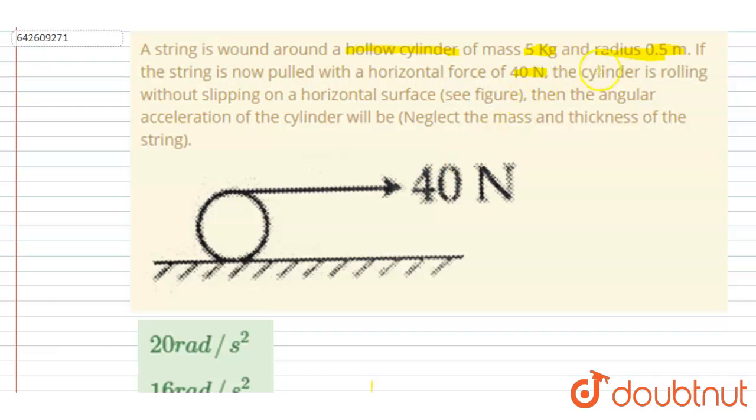The cylinder is rolling without slipping on a horizontal surface. Then angular acceleration of the cylinder will be - you have to find out the angular acceleration. So what will happen? This is a hollow cylinder, right, and it is given that if the string is pulled...